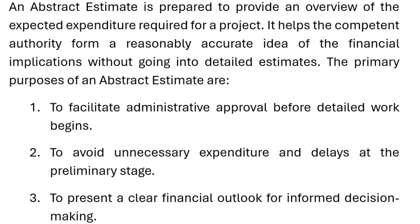Definition and purpose: An abstract estimate is prepared to provide an overview of the expected expenditure required for a project. It helps the competent authority form a reasonably accurate idea of the financial implications without going into detailed estimates. The primary purposes are: to facilitate administrative approval before detailed work begins, to avoid unnecessary expenditure and delays at the preliminary stage, and to present a clear financial outlook for informed decision-making.